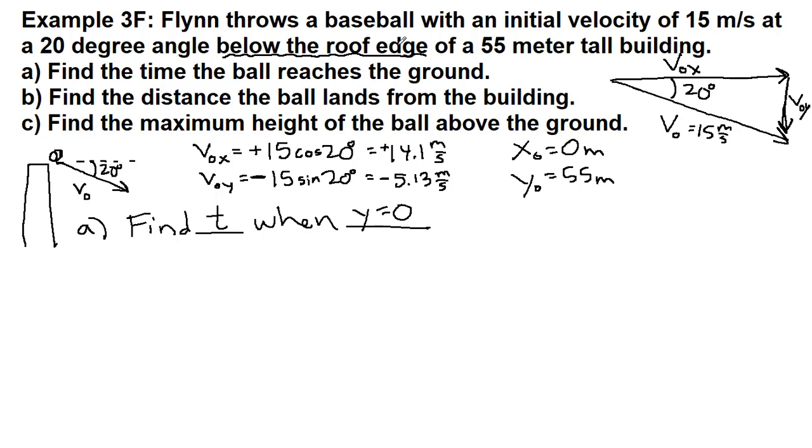That means we use the yt equation: y equals y naught plus v naught y t minus one half g t squared.